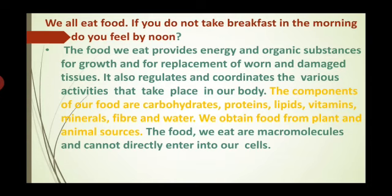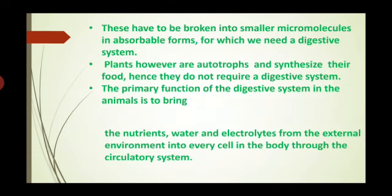The macromolecules we eat cannot directly enter our cells, but these molecules are converted into simpler, digestible and absorbable forms. This type of digestion takes place in our digestive tract. When food is taken in the mouth region, macromolecules are broken down into smaller, absorbable micromolecules, for which we need the digestive system.